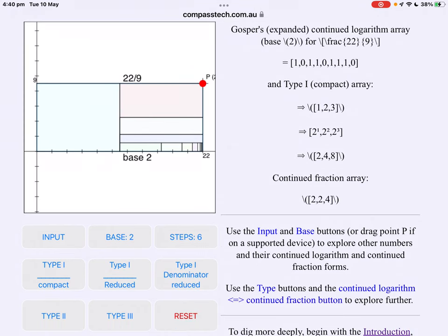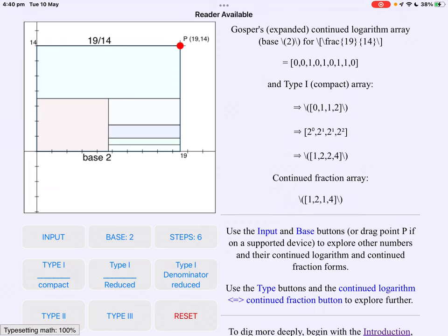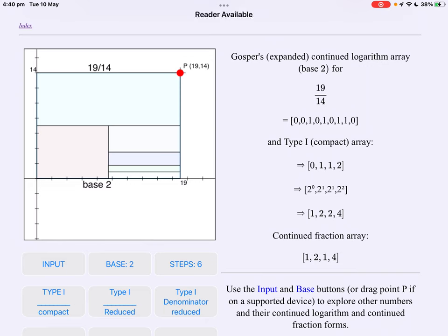We can actually apply this dynamically using our GeoGebra web model here. So for instance, 19 over 14. We see that the continued logarithm array, 0, 1, 1, 2, becomes 1, 2, 2, 4. Now the one says, take the whole thing. Don't divide it. So take the entire rectangle and don't do anything. But, because it's the end of the first sequence, the next sequence, instead of being vertical, will be horizontal. So the next says divide that rectangle in two, horizontally. We take the lower half of that and divide that in two. Take the right hand half of that and divide that in four.